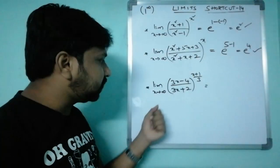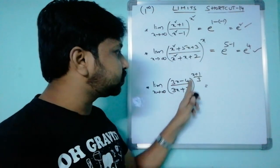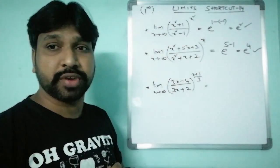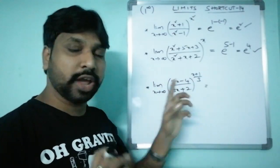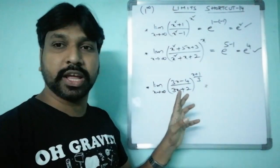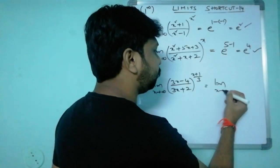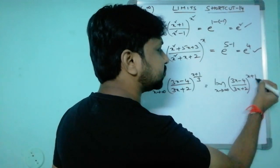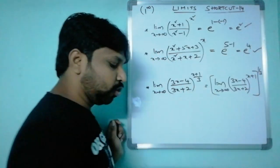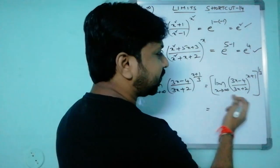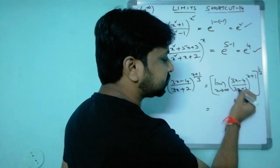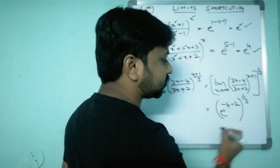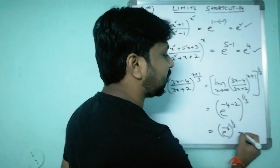Next: limit x→∞ of (3x−4)/(3x+2) whole power (x + 1/3). This is 1^∞ form, but not in our standard formation because the x-coefficient is 3, not 1. So rewrite it: limit x→∞ of (3x−4)/(3x+2) whole power x, then raise the entire result to the power 1/3. Applying the shortcut to the inside: e to the power of (−4 − 2) = e^(−6). Raising to the power 1/3 gives e^(−6 × 1/3) = e^(−2). That is the answer.